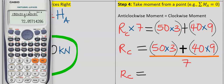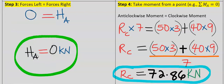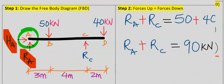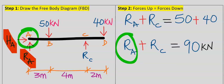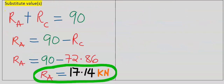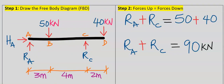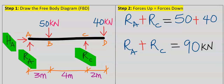Now that we have obtained the reaction force at point C, we go back to step 2 to find the reaction at point A. Substituting into step 2, the reaction force at point A is 17.14 kilonewton. Considering the free body diagram from step one, we now have all the reaction forces acting externally on the overhanging beam, and we are done with the calculation.